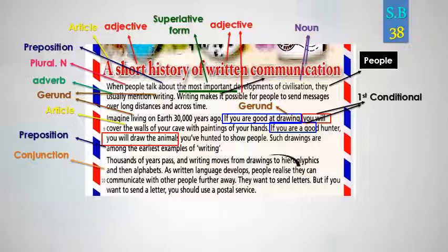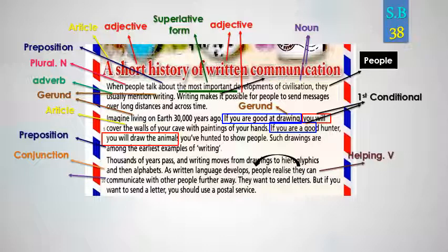'And' is a conjunction. 'They' refers to people. 'Can' is a helping verb — فعل مساعد. 'Communicate' is a verb — فعل. Note: 'communication' is a noun and 'communicate' is a verb — this word-form change is called derivation.